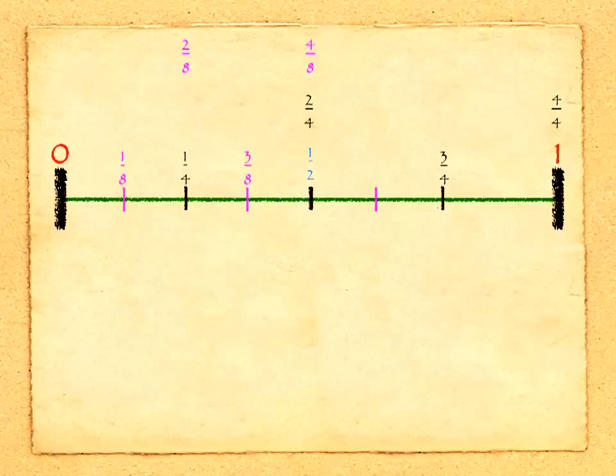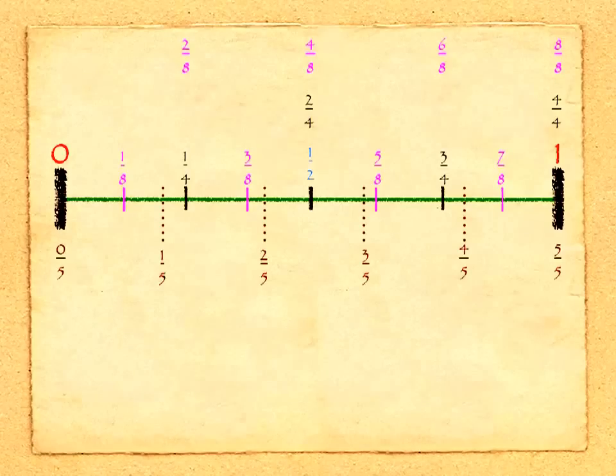The next point, halfway between 1 half and 3 quarters, would be 5/8. 6/8 is the equivalent to 3 quarters, and we have 7/8. And we can also say that 1 is also equivalent to 8/8. And there's any number of ways that we can break up this line. We could make it 20ths or 100ths. I'm also going to show fifths.